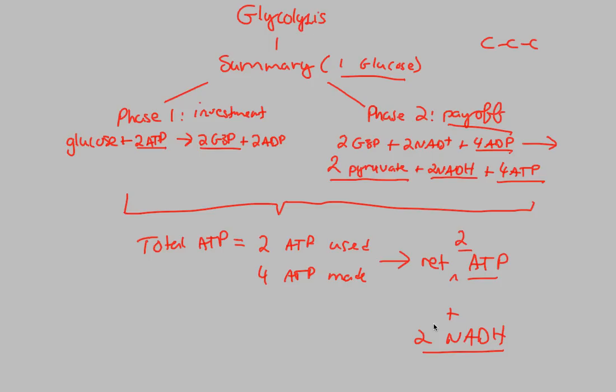So overall, glycolysis, again, which I want you to remember, this is an anaerobic process. No oxygen whatsoever involved. It's the process of splitting glucose without oxygen in the cytosol. It involves investment, and it involves payoff, and we eventually end up with a net of two ATP and two NADH molecules that will then be used in our next step of cellular respiration.